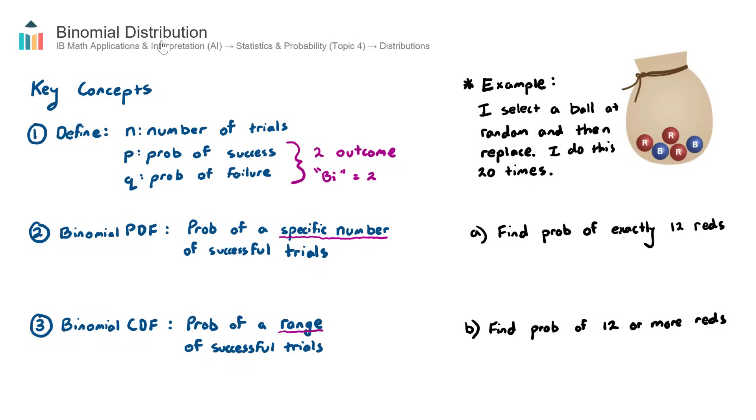In this video, we look at Binomial Distribution, which is part of the AI course under Topic 4, Statistics and Probability, under the subtopic of Distributions.